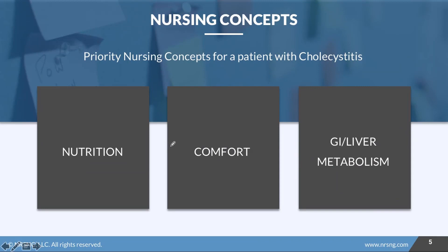The top priority nursing concepts for a patient with cholecystitis are nutrition — because they'll have difficulty with digestion, may be NPO, and need diet adjustments; comfort — because this condition is quite painful; and GI liver metabolism — because if not addressed, the backup can cause damage to the liver. Make sure you check out the care plan attached to this lesson for interventions and rationales.